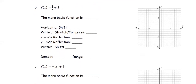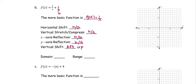The next function to graph is f(x) equals 1 over x plus 3. The more basic function is g(x) equals 1 over x. For the horizontal shift: none. For vertical stretch or compression: none. For x-axis reflection: none. For y-axis reflection: none. For the vertical shift, the k value equals 3, and since it's positive, the graph is going to be shifted up 3 units.